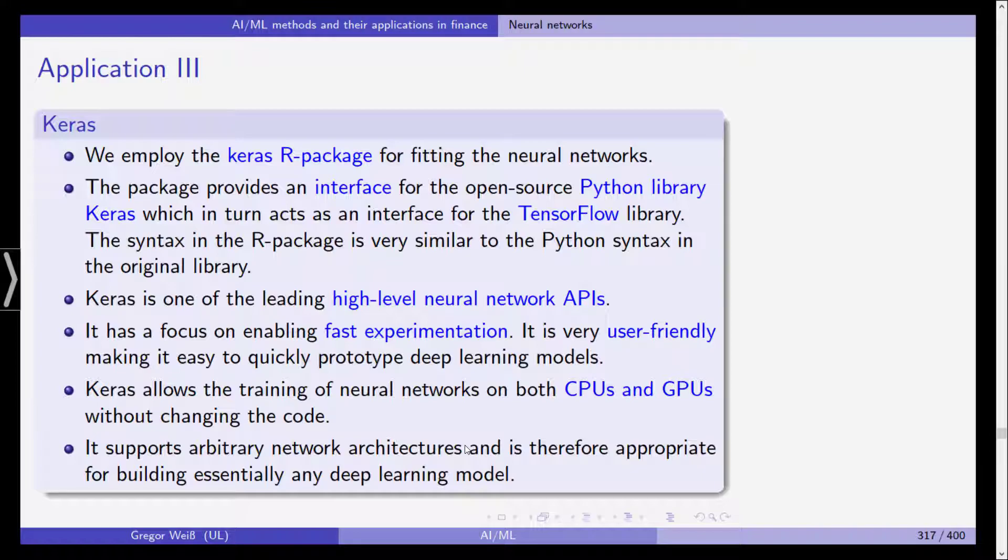It also allows the training of neural networks on both CPUs and GPUs without changing the codes. It also supports arbitrary network architectures. And it's quite appropriate for building essentially any deep learning model. That's why we are using this here and we are able to stay within R.